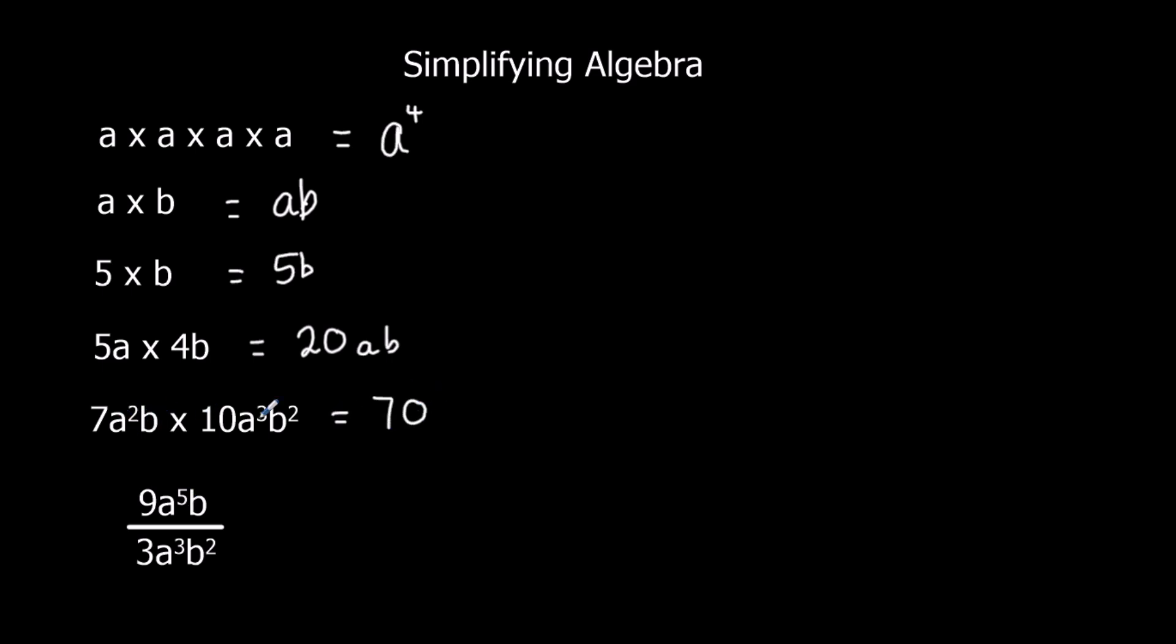a squared times a to the power of 3. When we multiply a squared and a cubed, what we do is we add the powers, because we've got two a's times together, and another three a's times together. So all in all, we've got five a's times together.